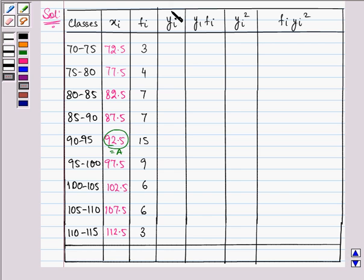Now what we need to do is we need to find Yi, that is Xi minus A upon H. So it will be minus 4, minus 3, minus 2, minus 1, 0, 1, 2, 3, 4.